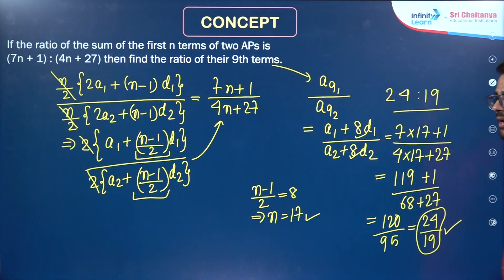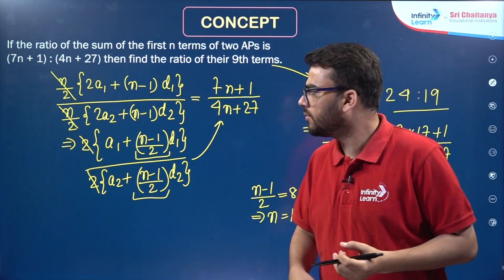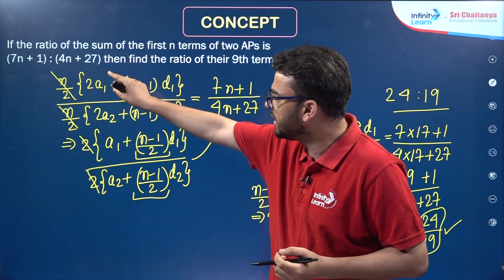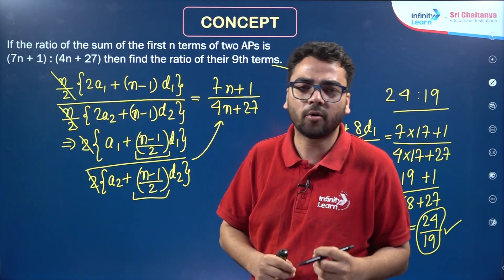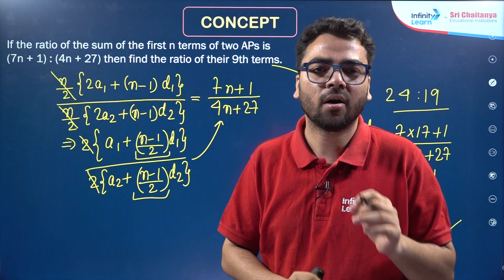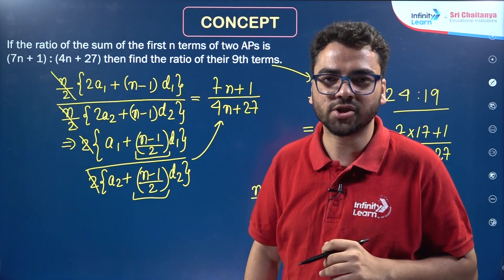So, you see this is a very important question actually. Obviously, the ratio of sum of the first n terms can be different as well. But this is a very important and a tricky question on the basis of arithmetic progressions.